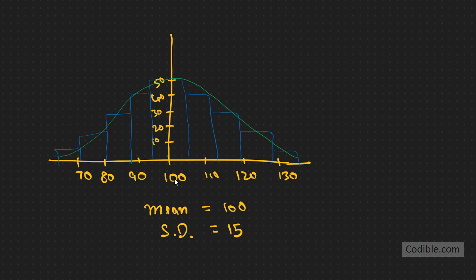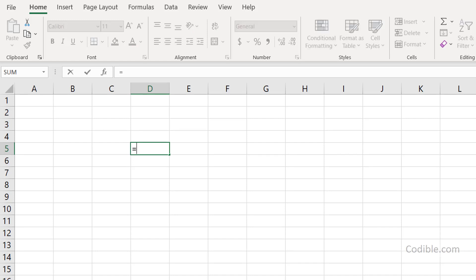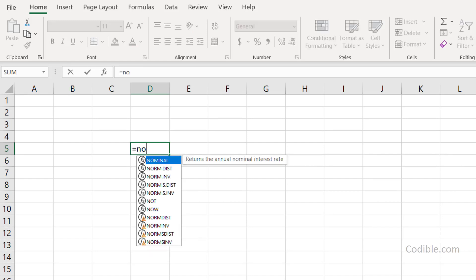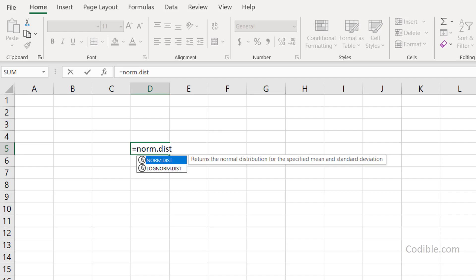You can intuitively say that this is probably half of the total area of the curve, so the proportion of times the supermarket has sold less than 100 cartons is 50 percent. Let's see how to calculate that using Excel with the function NORM.DIST, which gives us the area under the curve for the normal distribution.